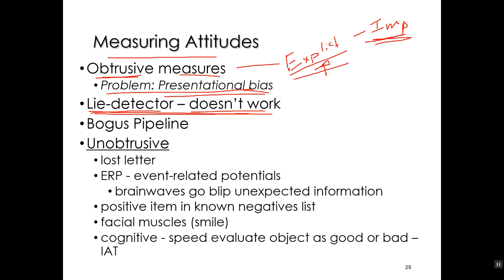The courts have long known that lie detectors don't work. You know from watching procedural police shows that lie detector results are not admissible in court — because the courts know they don't work. The NSA, the big spy organization for the U.S. government, doesn't use lie detectors to screen spies because they know it doesn't work.